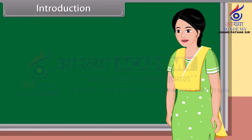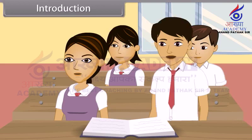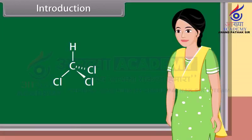Can anybody give an example? Yes, ma'am. Chloroform is a polyhalogen compound. Very good, Rohit. Now we learn more about chemical reactions of haloalkanes and haloarenes and polyhalogen compounds.